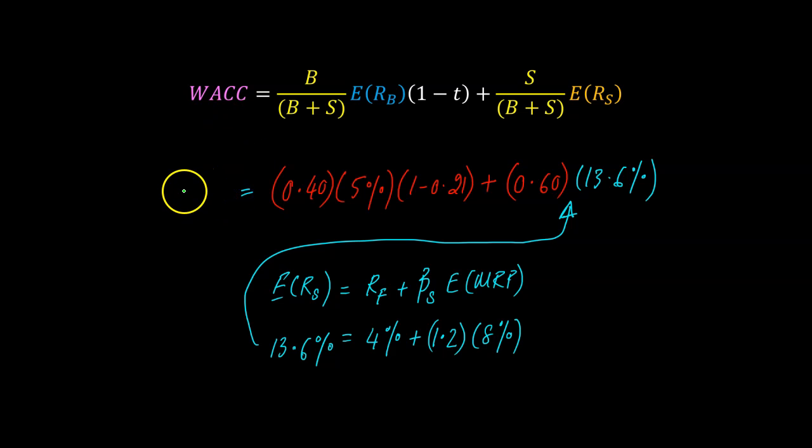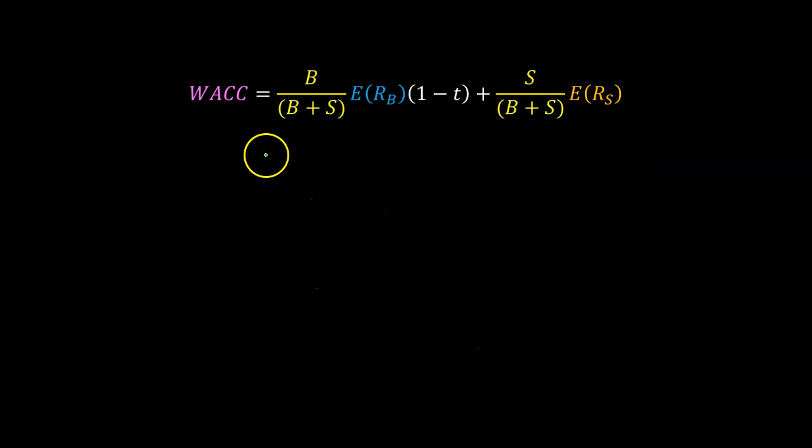Plugging in all these values, you get a current weighted average cost of capital of 9.74%. Now the next question is how does the WACC change after the change in capital structure?